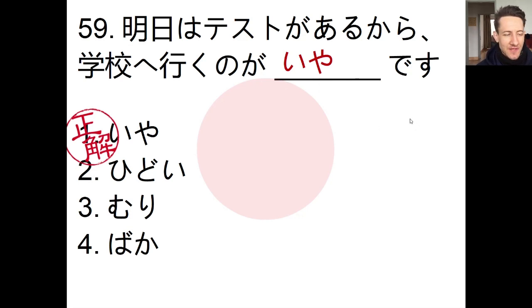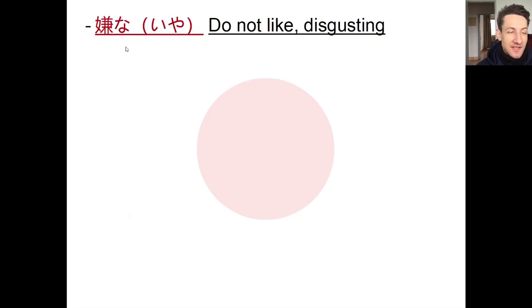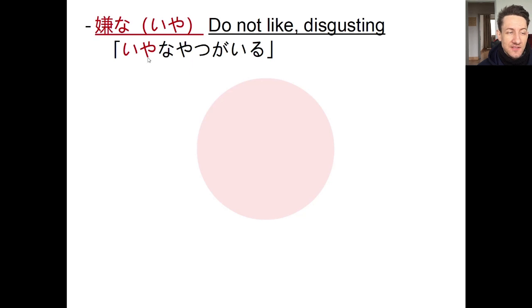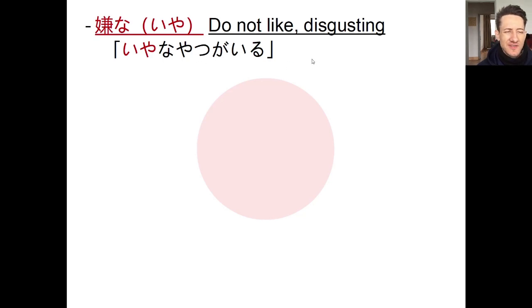Iya — you'll often see it written in hiragana. It means you don't like something, or something is disgusting or unappealing. You can use it as a na-adjective: for example, iya na yatsu ga iru — there's a person here that I don't like.